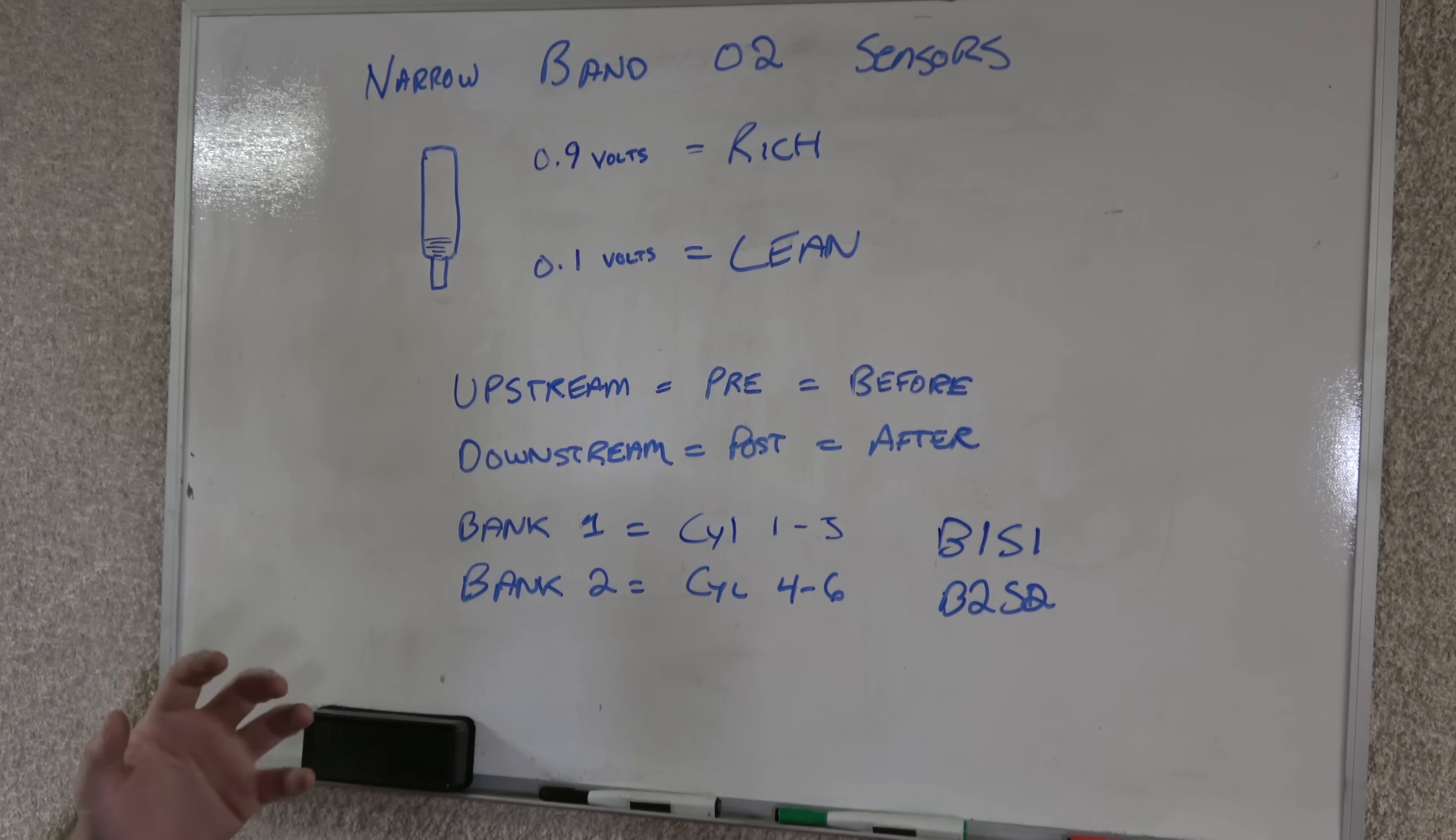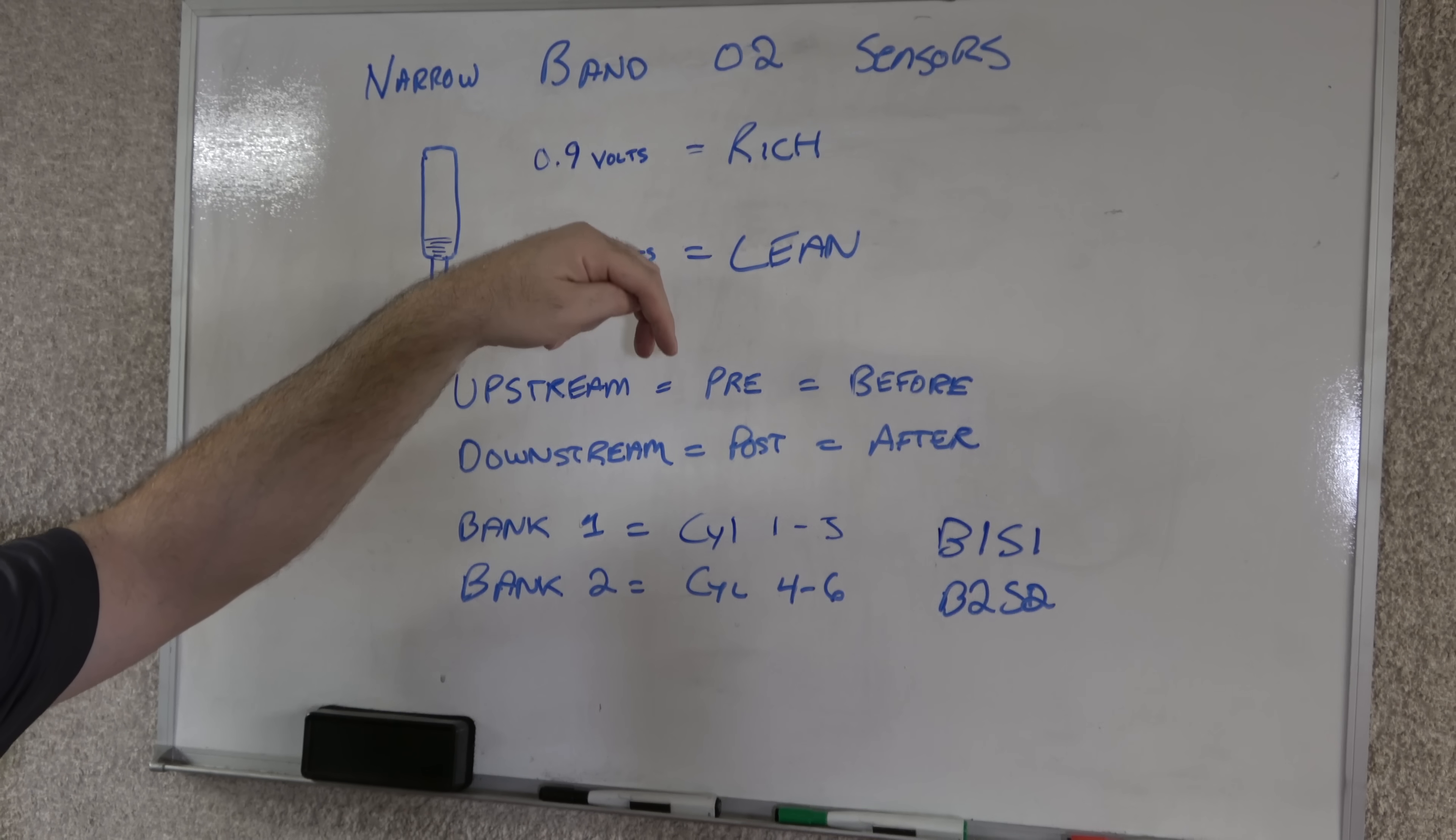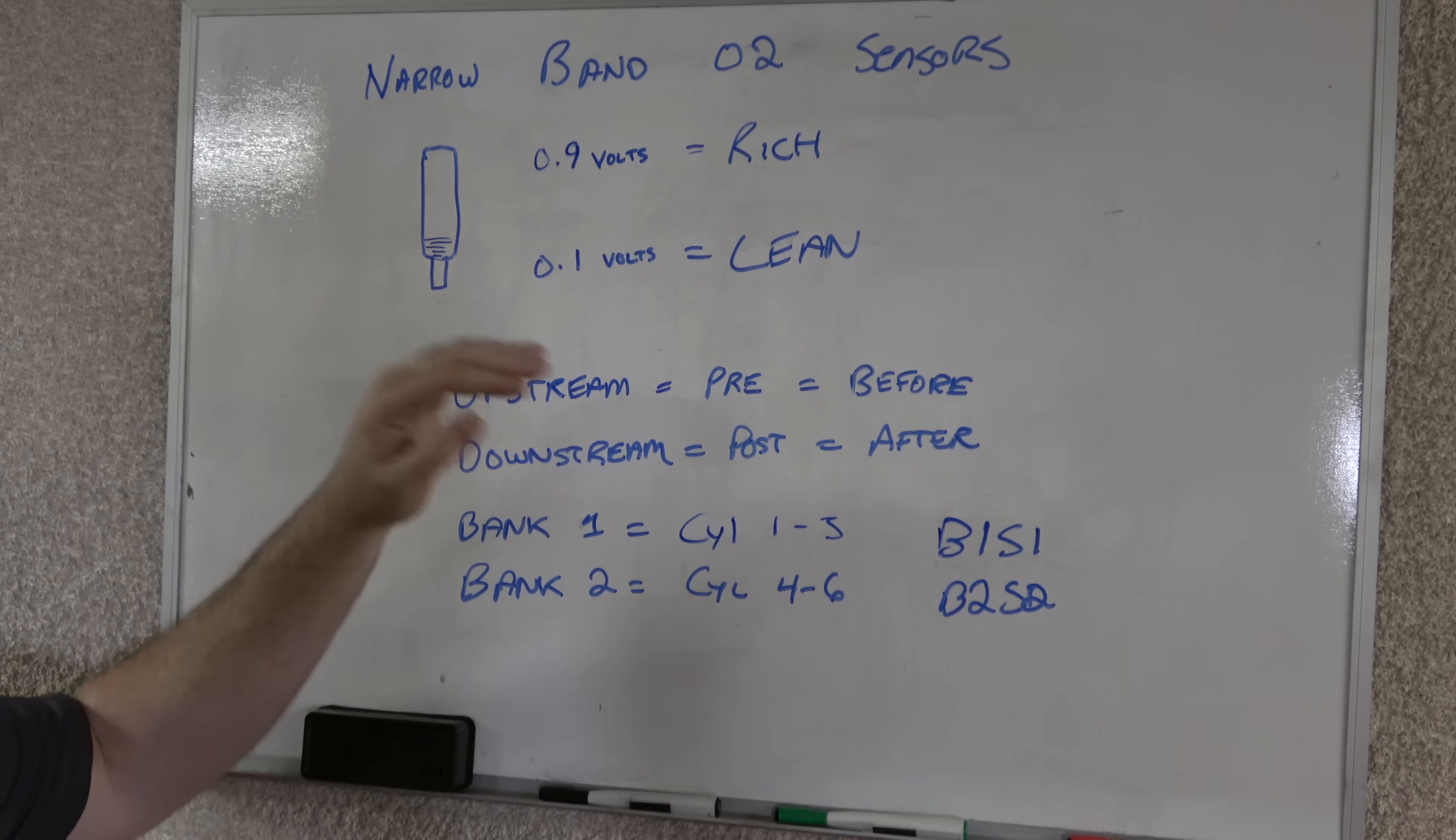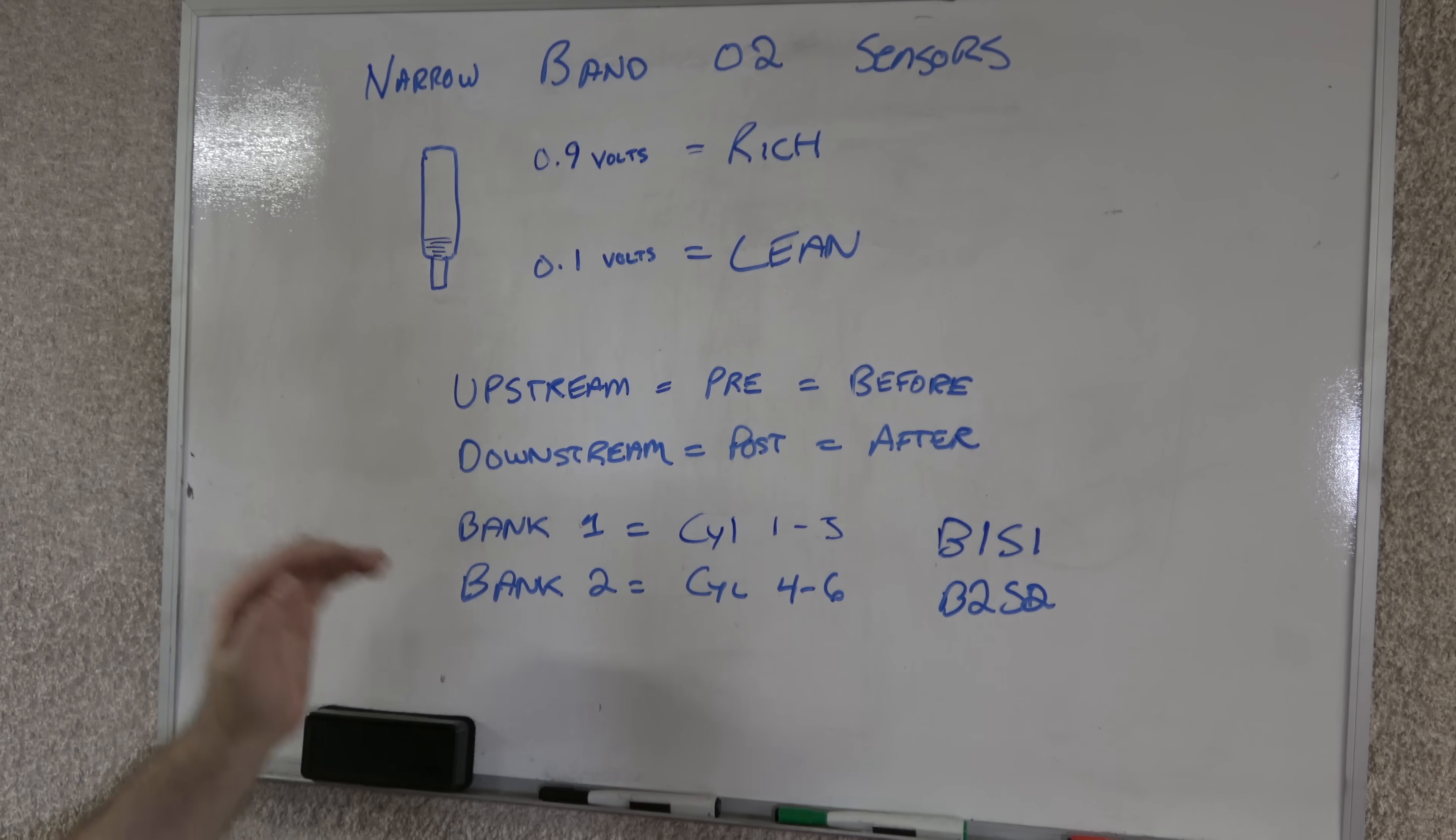Now, what's the difference between the upstream and the downstream sensors? Essentially, physically, there is no difference. They are literally the same exact thing. And a narrowband O2 sensor is a narrowband O2 sensor, but the purpose of them is completely different. The pre-cat sensors are there in order to tell the engine, the engine computer, how the combustion process went right after the combustion process happened. So it tells the engine if the mixture was too lean or too rich, and it allows the engine to remove fuel or add fuel in order to correct it and bring it back into stoichiometric, which is 14.7 parts of air to one part fuel. So that's the job of the upstream sensors.